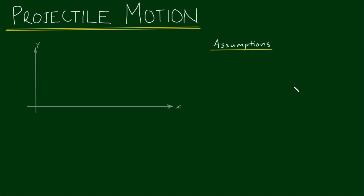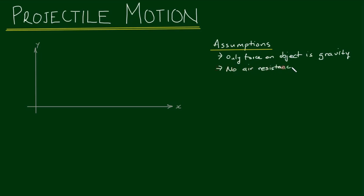The concept around projectile motion is that an object is thrown close to the Earth's surface and we're going to be analysing the motion immediately after it's been thrown. So the only force the object is subjected to is gravity. To keep it simple, we're going to assume the object is small and heavy enough to not experience any air resistance or any other forces. And finally, because there's no other forces, the motion only occurs in the vertical plane — the x-y plane.